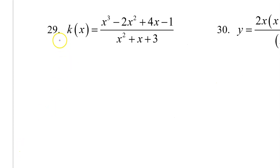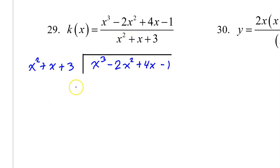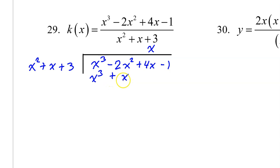In number 29, we again have the situation where the degree of the numerator is exactly one more than the denominator, so again we will have a slant asymptote. Set up the long division and begin by dividing your leading terms: x to the third power divided by x squared is x. Line up your x terms. Next, multiply: x times x squared is x to the third power — these will always match. x times x is x squared, and x times 3 is 3x.